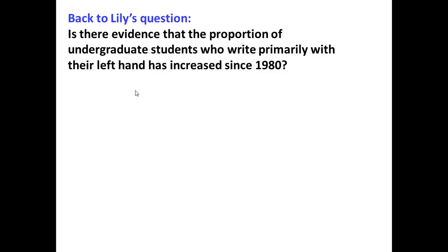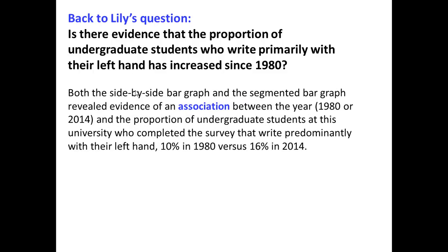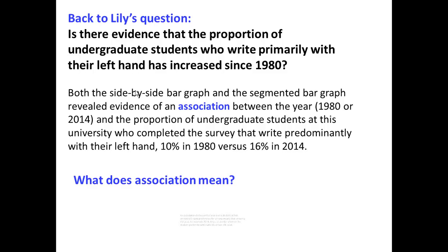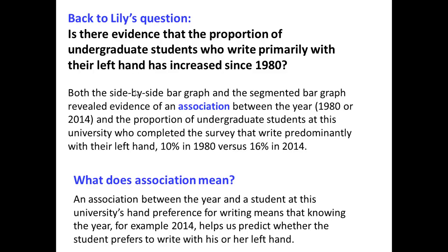Let's get back to Lily's question. Is there evidence that the proportion of undergraduate students who write primarily with their left hand has increased since 1980? Both the side-by-side bar graph and the segmented bar graph revealed evidence of an association between the year and the proportion of undergraduate students who write predominantly with their left hand: 10% in 1980 versus 16% in 2014. An association between the year and hand preference means that knowing the year helps us to predict whether the student prefers to write with their left hand — in other words, it gives us some added information.